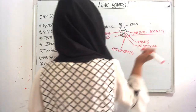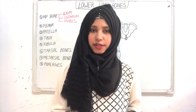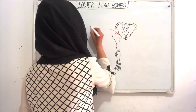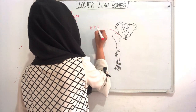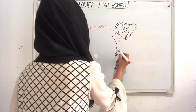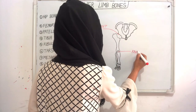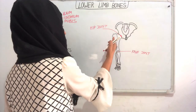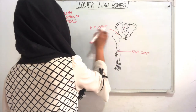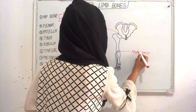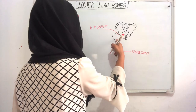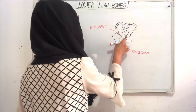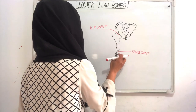Now I will talk about the joints. This is the hip joint and this is the knee joint. At the hip joint, our hip bone and our femur join together. At the knee joint, our femur and our tibia join together and make the knee joint. Our femur joints with our tibia, not with the fibula.